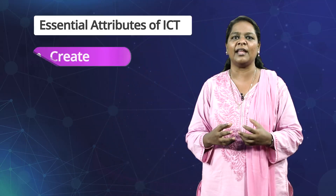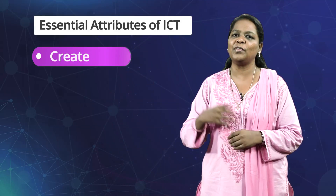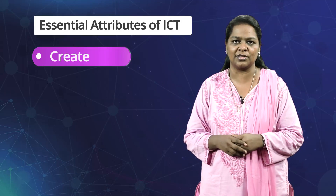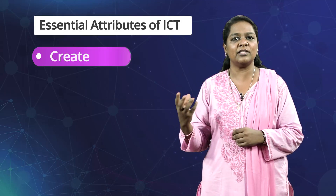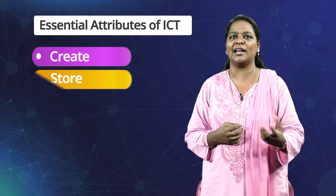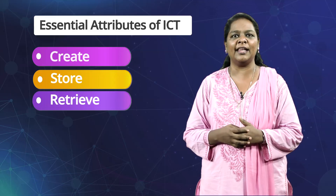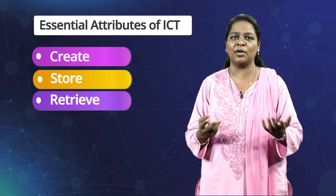Let's take this as an example. Have you clicked a photograph using a smartphone? What do you really do when you click a photograph? Whenever we click a photograph, we actually create digital information of the person, object, or situation which we have clicked. The created digital information gets stored in our mobile, and the stored information can be retrieved from our mobile at any time, anywhere, whenever we require.